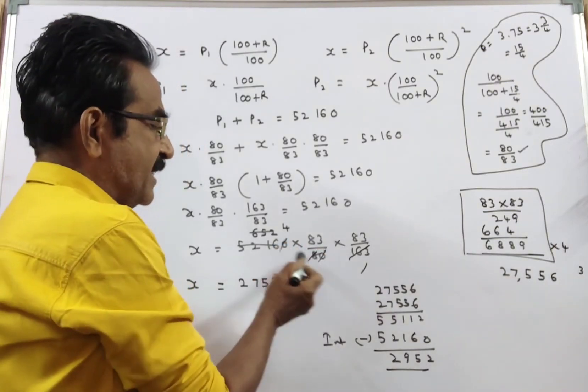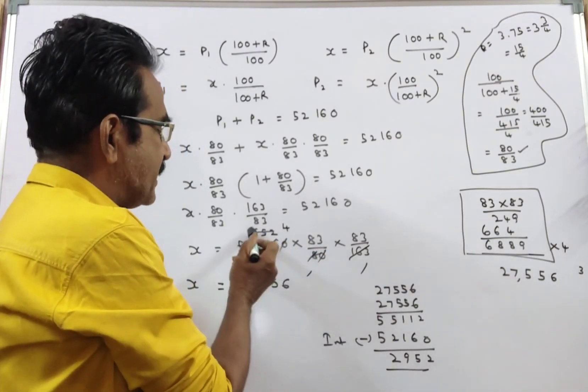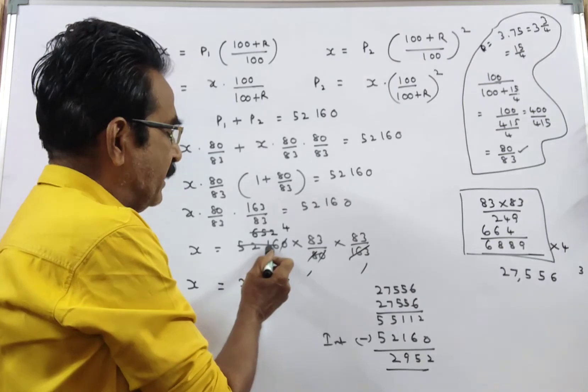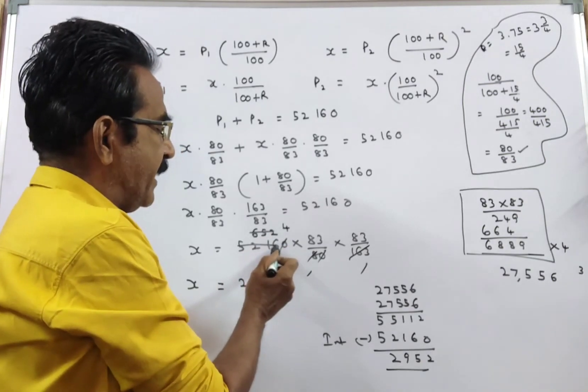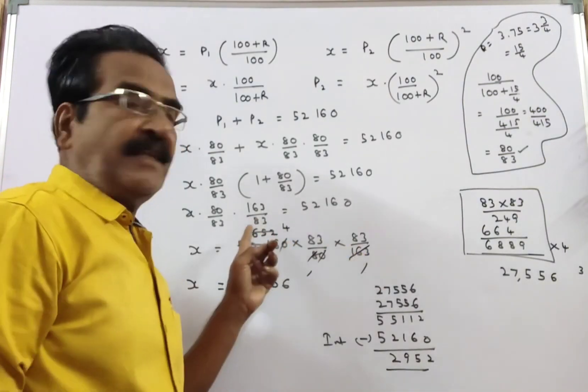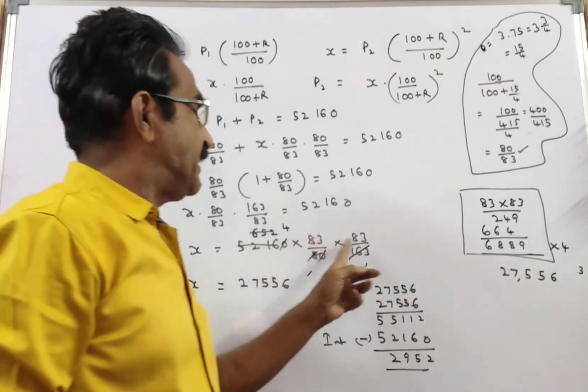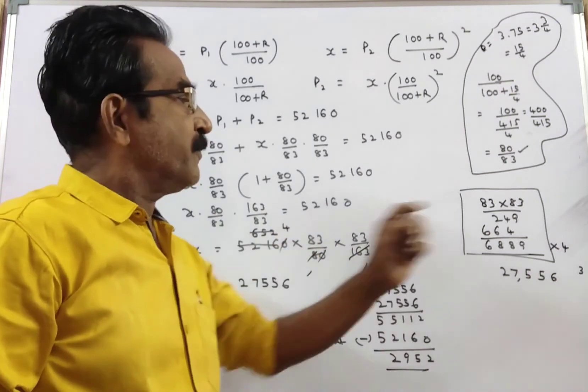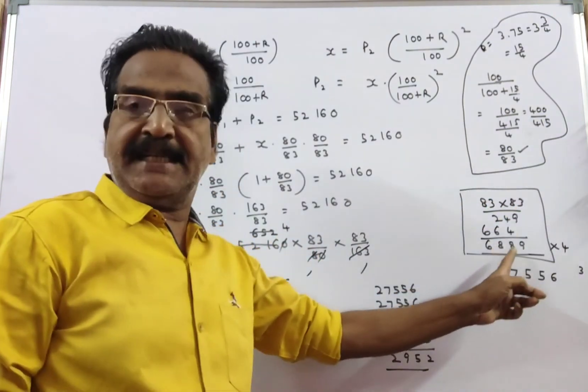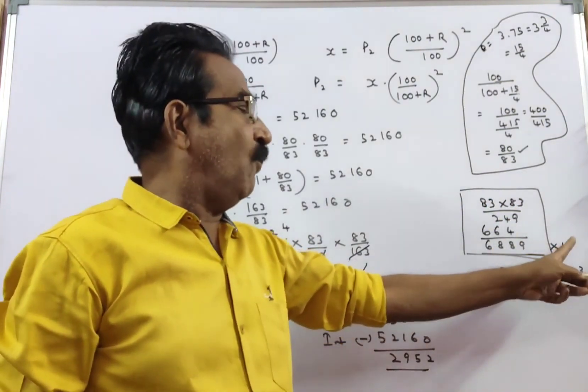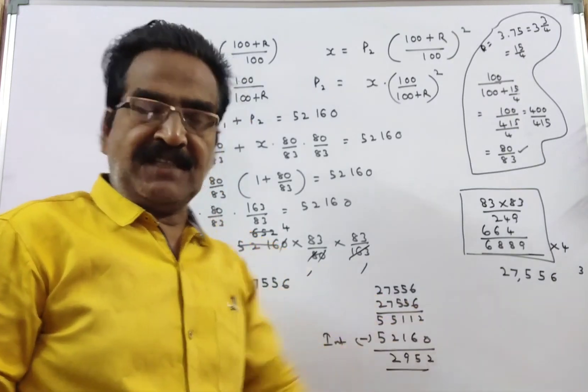The zeros get cancelled. Simplifying, we get 5216 into 83 by 163. After calculation, x equals 83 into 83 into 4. 83 into 83 is 6,889, and 6,889 into 4 equals 27,556.